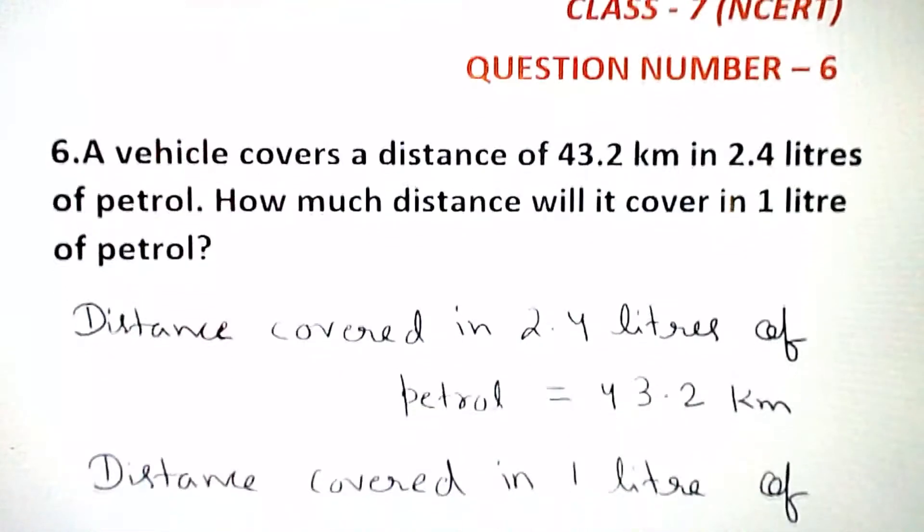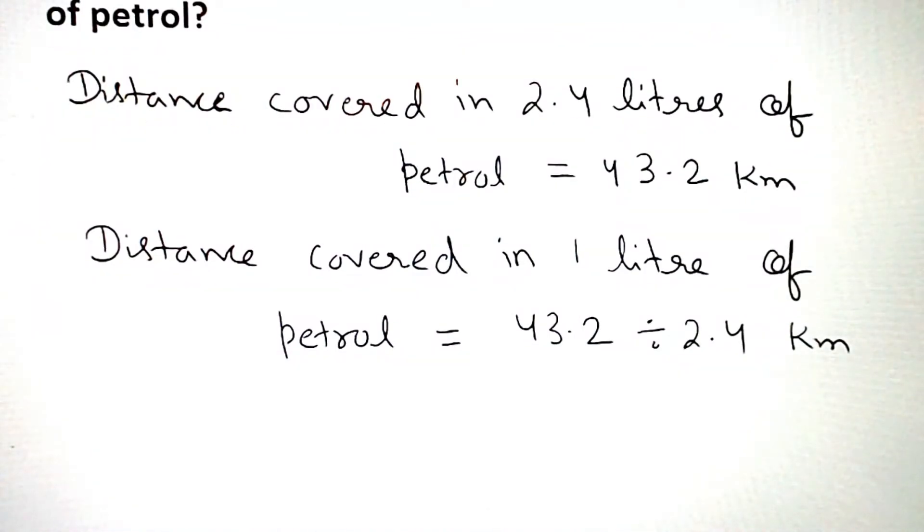Therefore we can write here: distance covered in 2.4 liters of petrol is equal to 43.2 km. Distance covered in 1 liter of petrol will be divided.